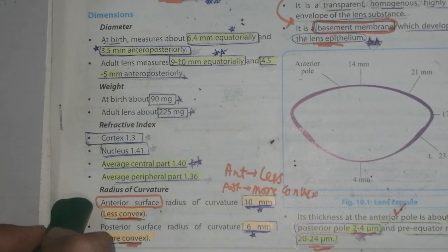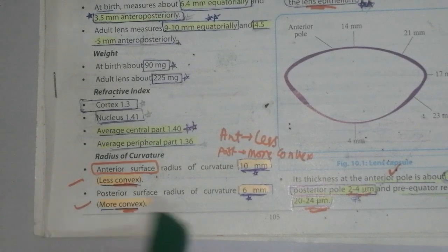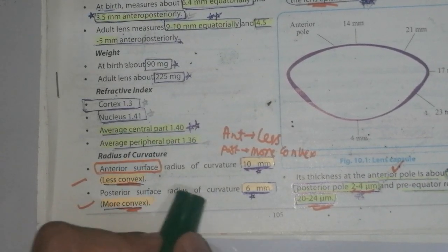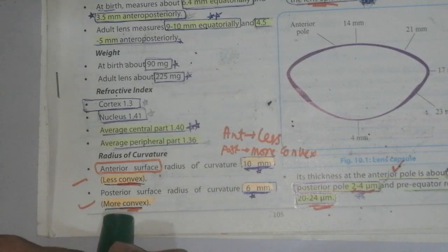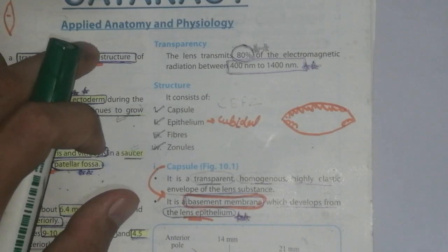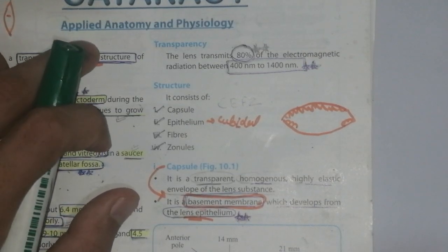Now radius of curvature: radius of curvature is 10mm, less convex, while the posterior surface radius is 6mm, that is more convex in nature.